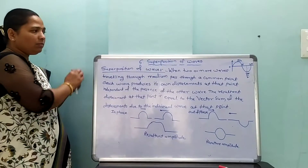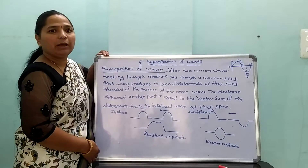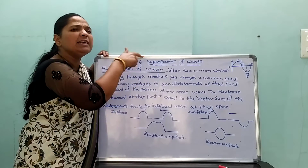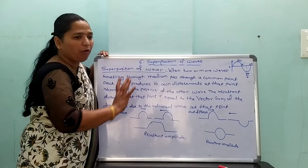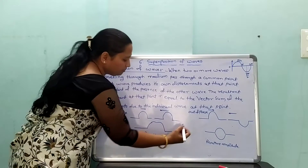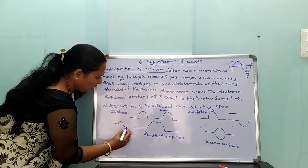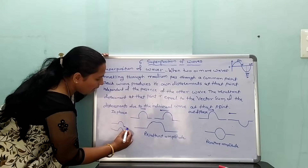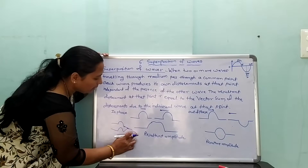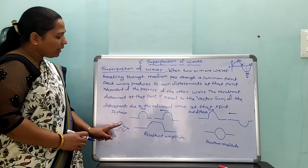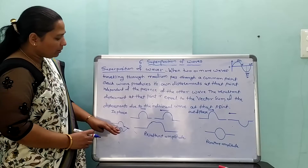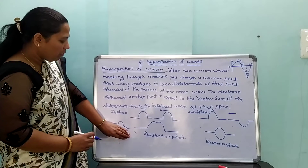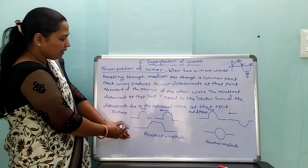When two waveforms are in phase and arrive simultaneously in the medium, according to the superposition principle, they cross the same common point. The two waveforms cross the same common point and the resultant waveform of those two waves is obtained.